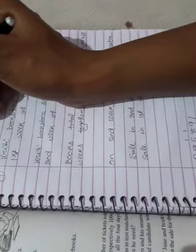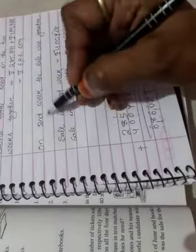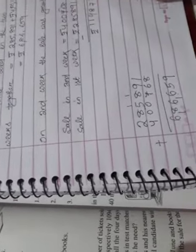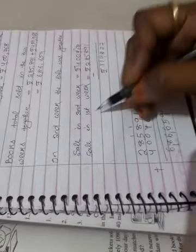Next question. In which week was the sale greater and by how much? In second week the sale was greater because 4 lakh is greater than 2 lakh. Next. How much?